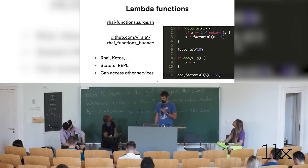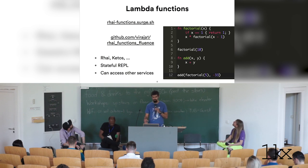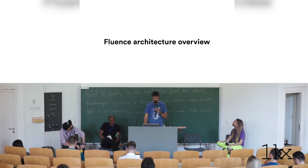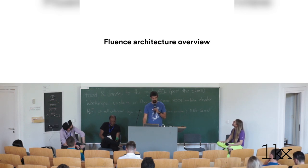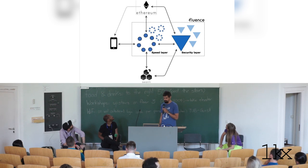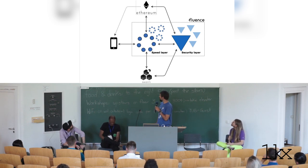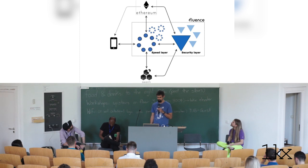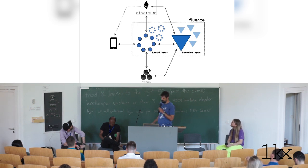We also have lambda function support with access to databases and other services, so you can change the behavior of the program on the fly. The architecture consists of a network of Fluence nodes with two layers: a real-time processing layer, or speed layer, and a delayed security or verification layer. We depend on decentralized storage — currently IPFS on DevNet — and we use Ethereum as a final source of trust.